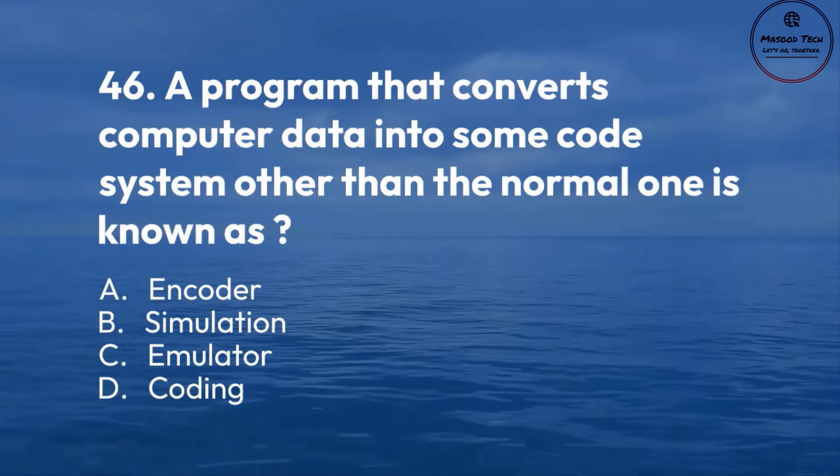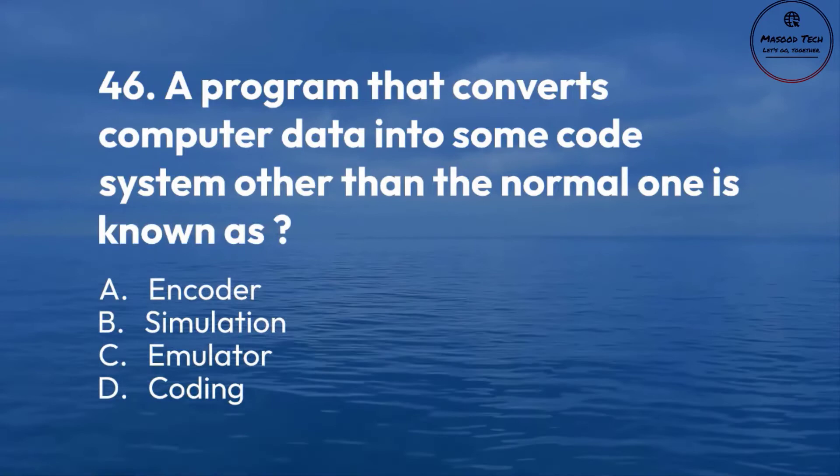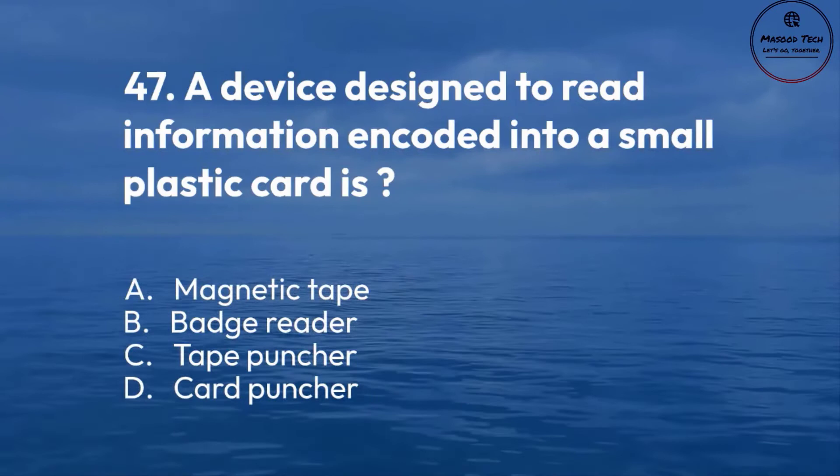Number 47. A device designed to read information encoded into a small plastic card is: A. Magnetic tape. B. Badge reader. C. Tape puncher. D. Card puncher. Correct answer is B.